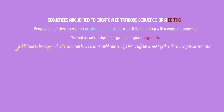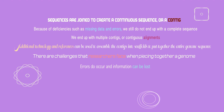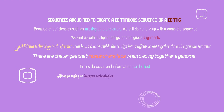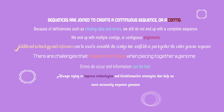Additional technology and references can be used to assemble the contigs into scaffolds to put together the entire genome sequence. It should be noted, however, that there are challenges that researchers face when piecing together a genome. Errors do occur and information can be lost. Programmers and researchers are always trying to improve technologies and bioinformatics strategies that help us more accurately sequence genomes.